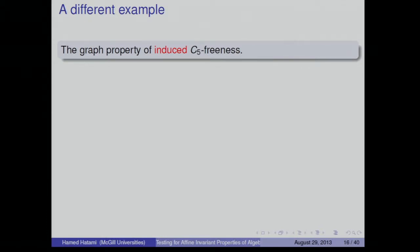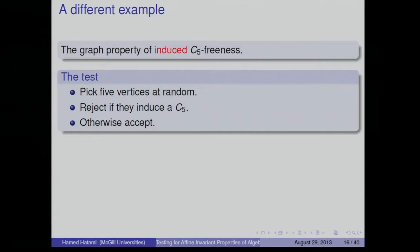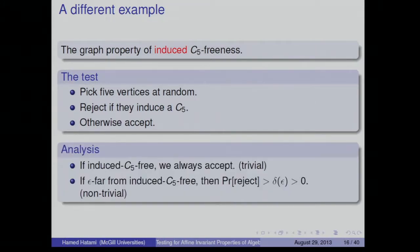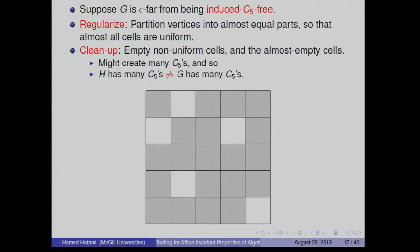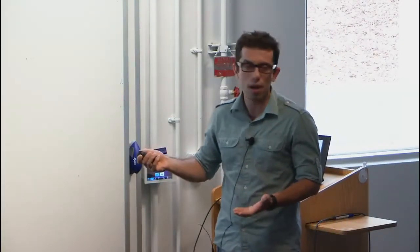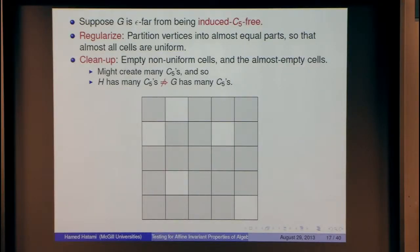Now consider the property of not containing a cycle of length 5 as an induced subgraph. Non-edges matter here too. The same proof strategy fails: in the cleanup stage, removing edges can create new induced C5s, so finding many induced C5s in H doesn't imply the original graph had many. To overcome this, Alon, Fischer, Krivilevich, and Szegedy proved a variant of the regularity lemma suited for induced subgraphs.